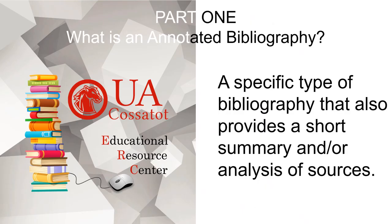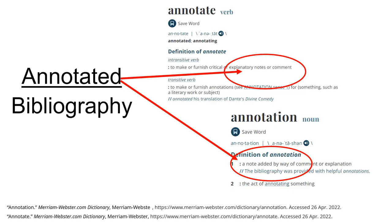So what exactly is an annotated bibliography? It sounds intimidating, but it's not. It's just a type of bibliography that also provides a short summary or an analysis of the source. To break it down, let's look at what annotated means. To annotate is to take notes, and an annotation is to add notes with comments or explanations. So if you're taking notes in class, you're actually annotating.